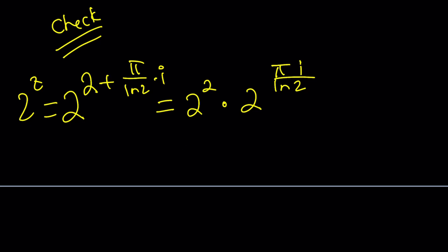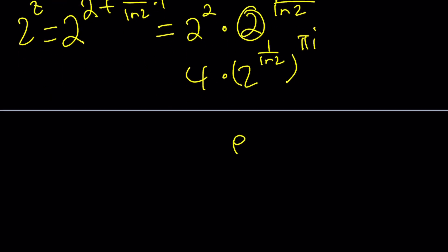But I want to replace 2 with something. You know what that's going to be? E to the power ln 2. And then I'm raising it to the power 1 over ln 2 multiplied by pi and then raise it to the power pi i. These two are going to cancel out. We're going to end up with 4 times e to the pi i. Remember e to the pi i is just going to be negative 1.